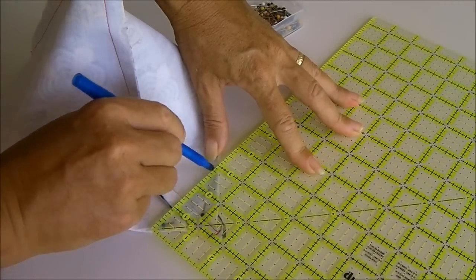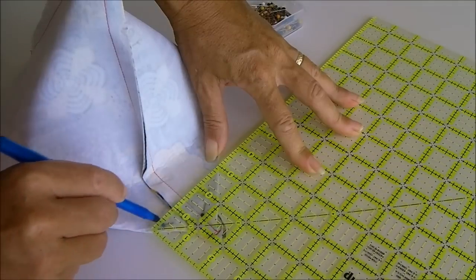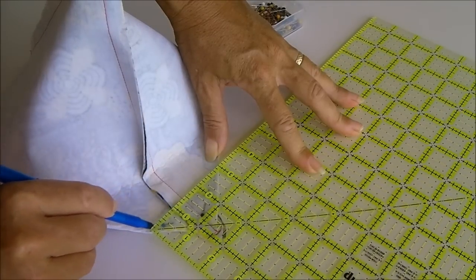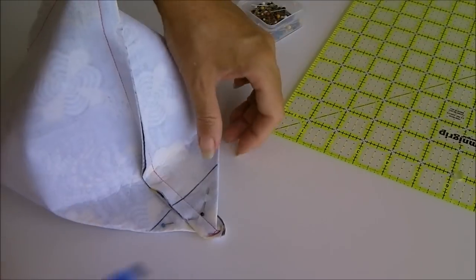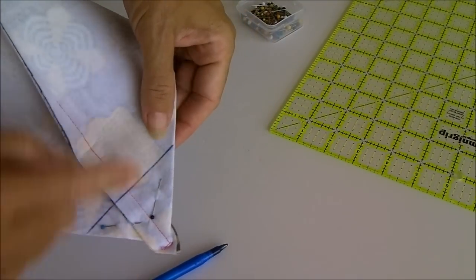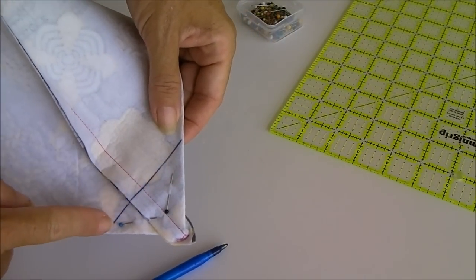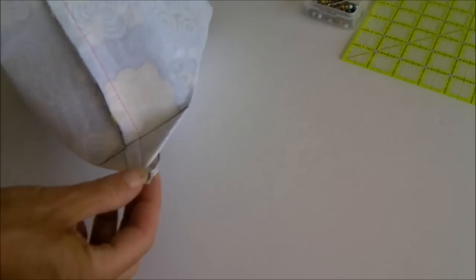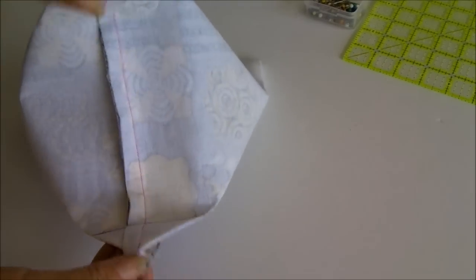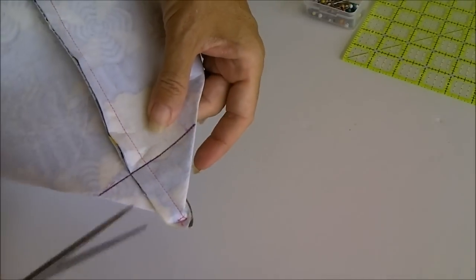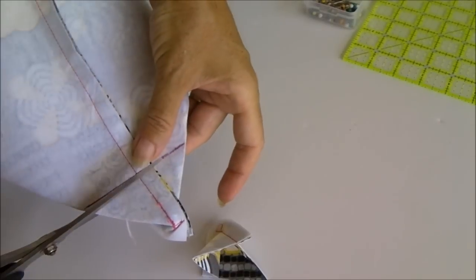And now if I draw my line with my pen this will be my stitching line and I can repeat that exactly the same on the other side and now I'm going to stitch across this line and come back.